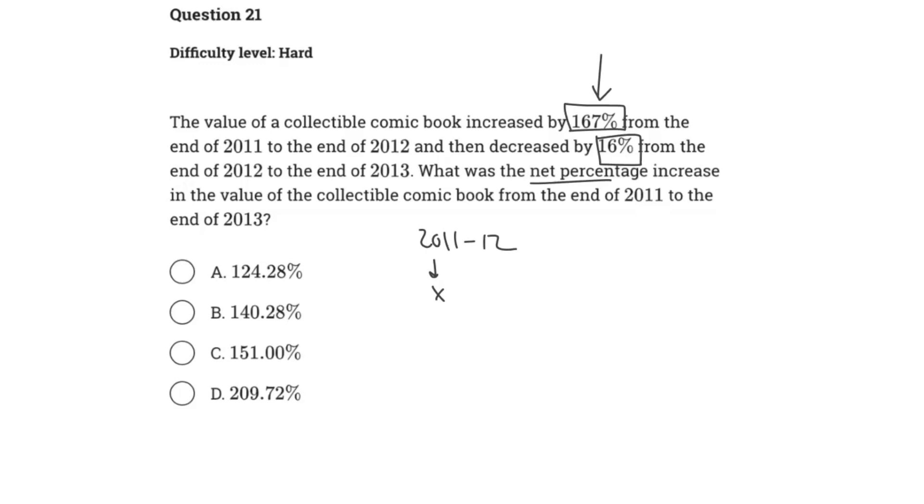So x here, 167 percent can also be represented as 2.67 as our scale factor. Why? Well, because you can either think of it as a 100 percent increase is just a 2x multiplier and therefore you can just add the 0.67 over it, or you can use the formula 1 plus or minus, depending on the increase or decrease, percent over 100. So here if we were to plug in 167, right, 167 divided by 100 would be 1.67, and 1 plus 1.67 would give us 2.67.